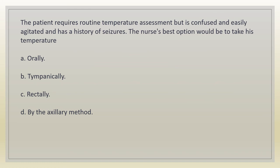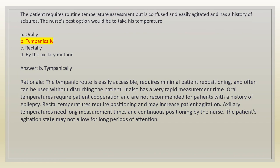The patient requires routine temperature assessment but is confused and easily agitated and has a history of seizures. The nurse's best option would be to take his temperature: A. orally. B. tympanically. C. rectally. D. by the axillary method. Answer: B. Tympanically. Rationale: the tympanic route is easily accessible, requires minimal patient repositioning, and can often be used without disturbing the patient with very rapid measurement time. Oral temperatures are not recommended for patients with a history of epilepsy. Rectal temperatures may increase patient agitation. Axillary temperatures need long measurement times.